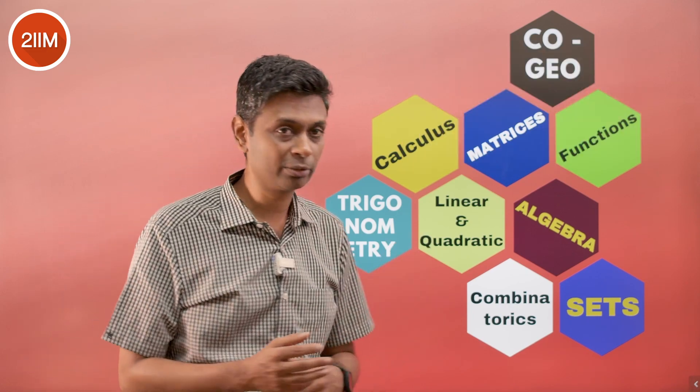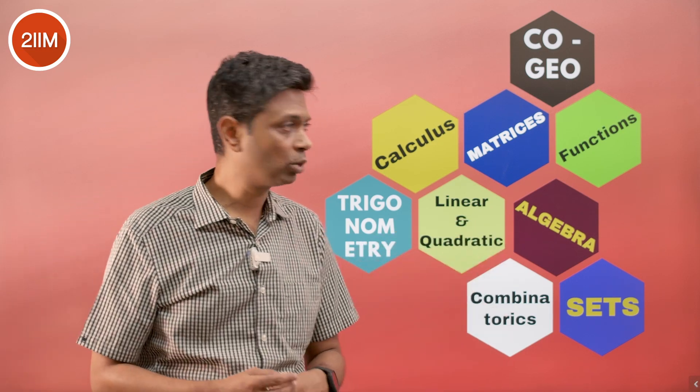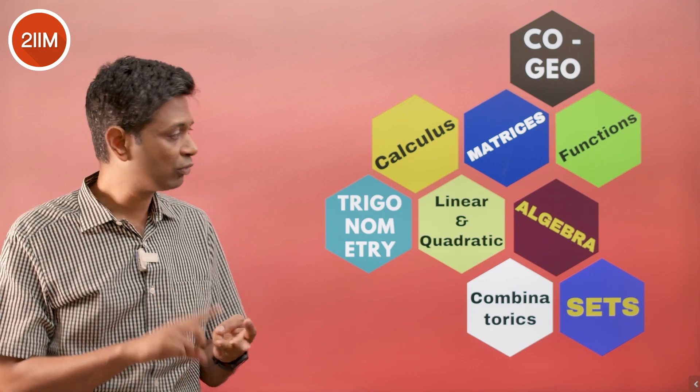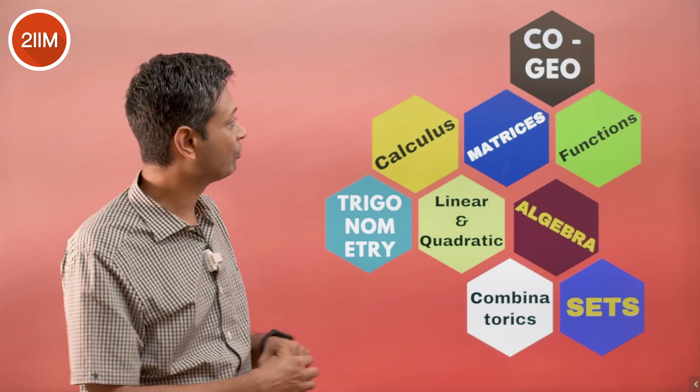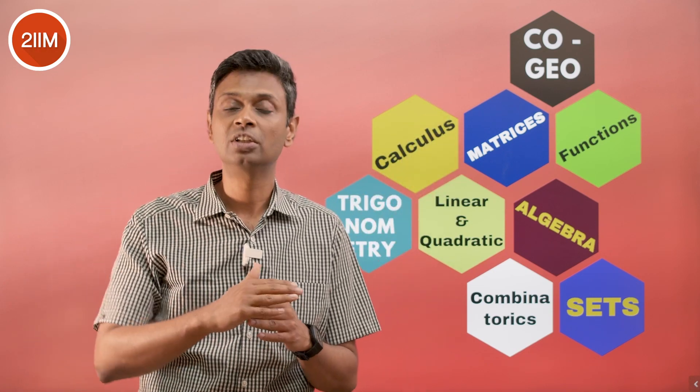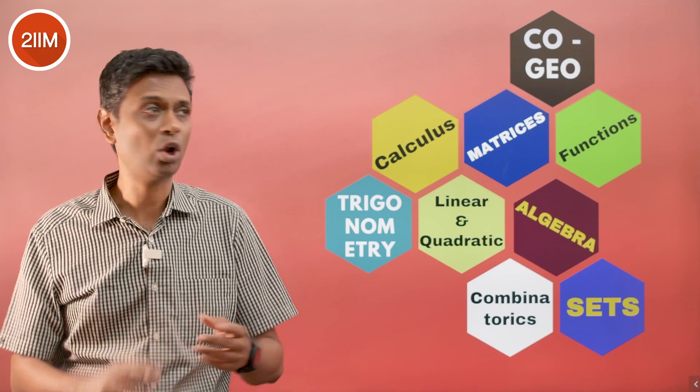Looking at the topics covered: linear and quadratic is by far the simpler one. Then algebra—we talk about inequalities, polynomials, a little bit of complex numbers. Matrices, coordinate geometry—not simple straight line but structures, two lines intersecting, circle and line, tangent, normal, all kinds of things.